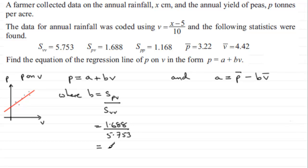Now for a then, a is going to equal the mean of p, which is 3.22, and then we've got to subtract b, which we've just found out is this value 0.2934 and so on. And we're multiplying that with v bar. V bar is 4.42, hope you can see that. Well when you work that out, you end up with 1.9231 and so on.